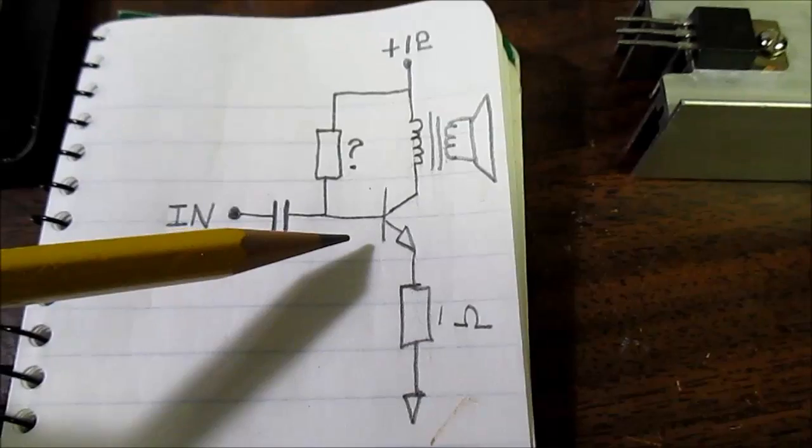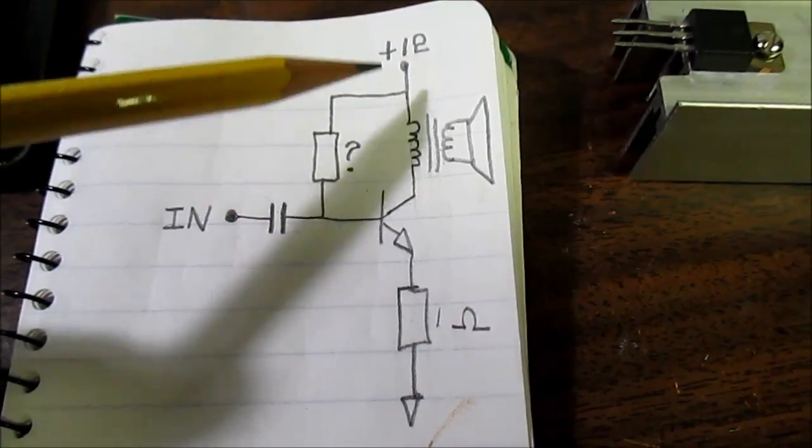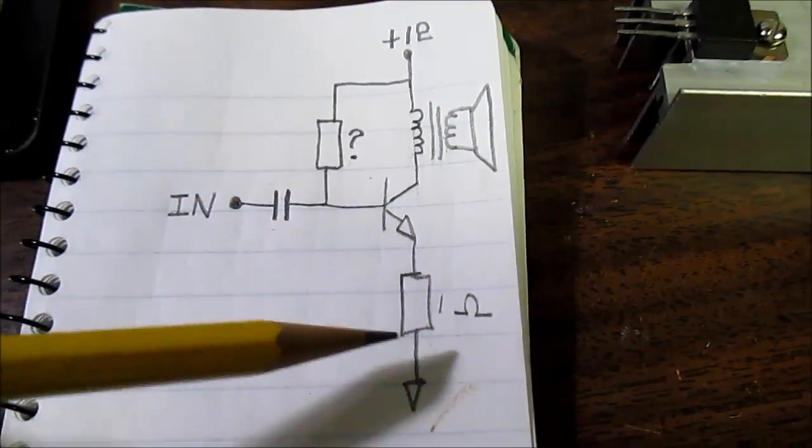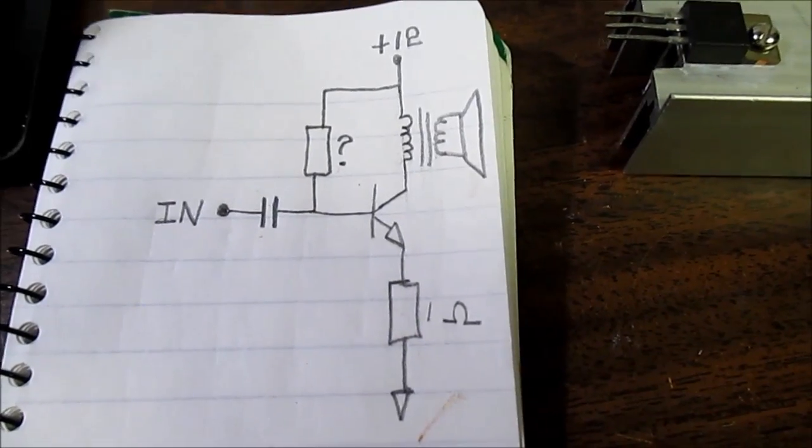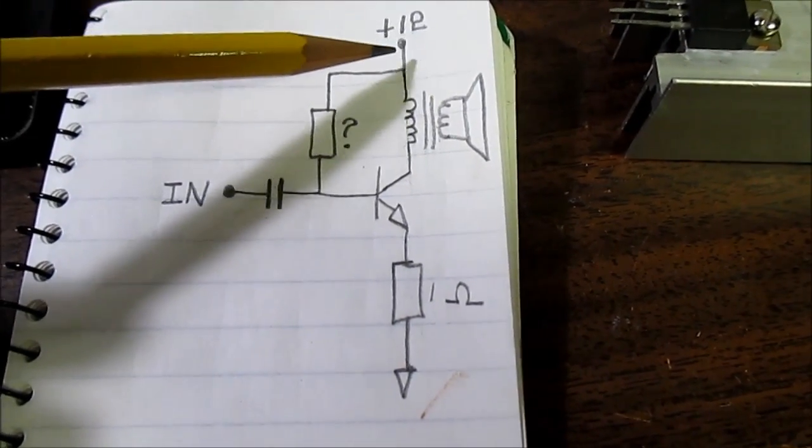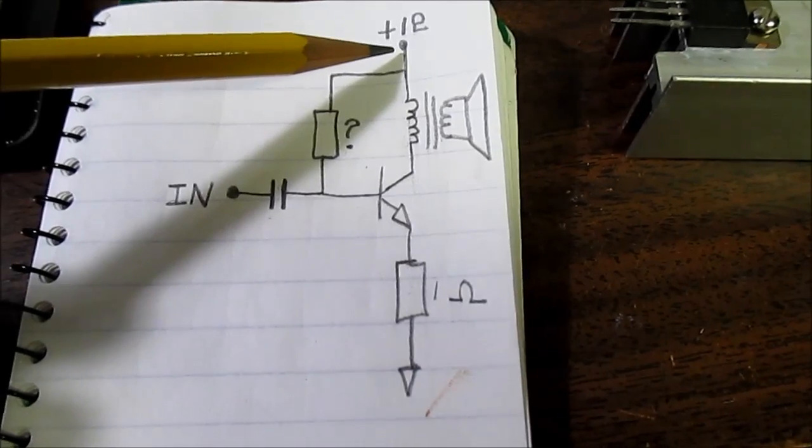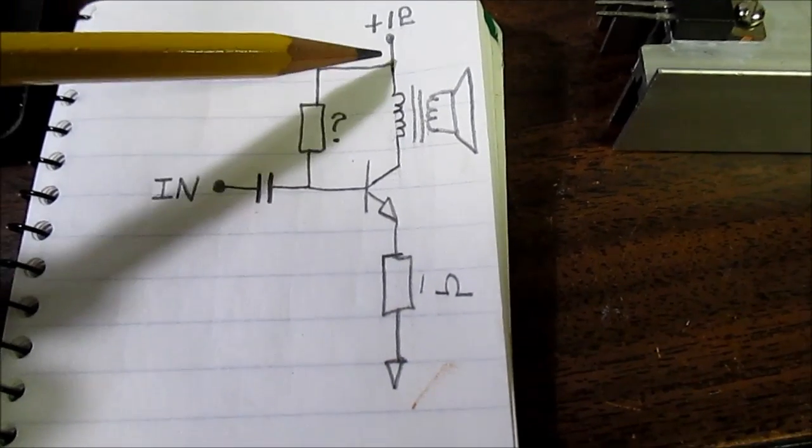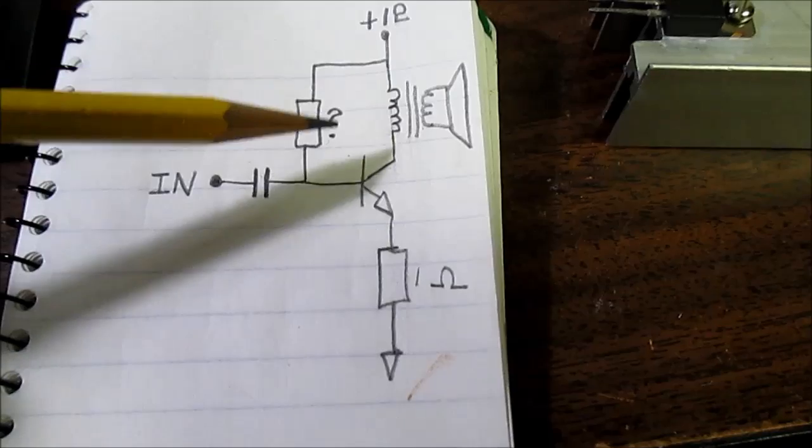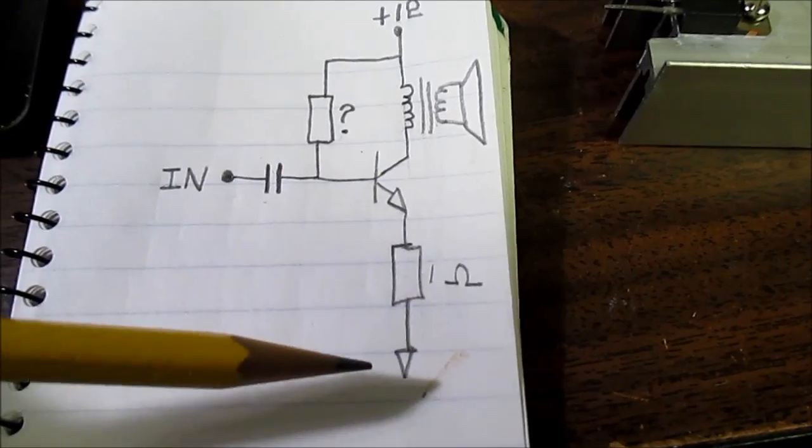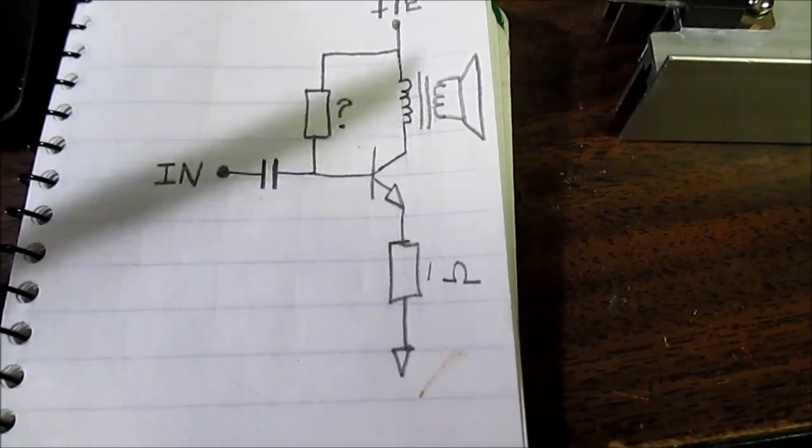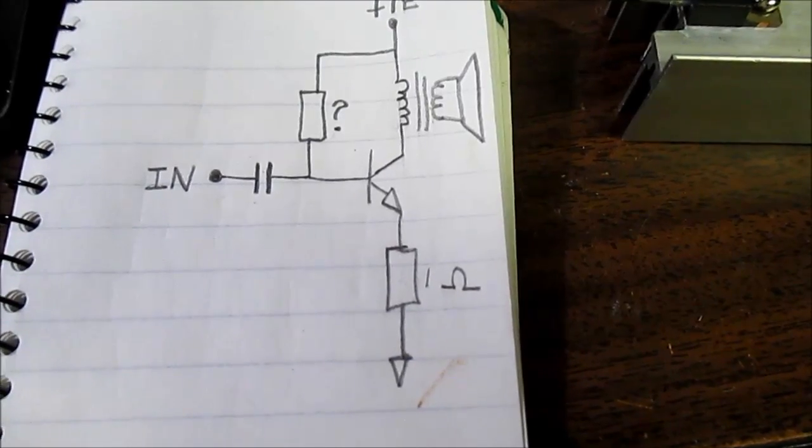These were used in the early days of solid-state because of the simplicity, but they were power hungry. For example, in an AM car radio, this would be biased at around 500 milliamps, so it would constantly draw 6 watts, even though it's just sitting there idle.